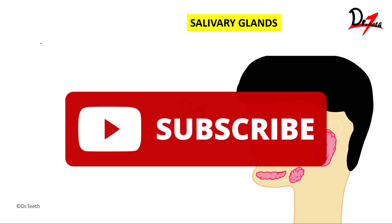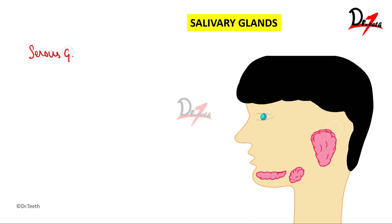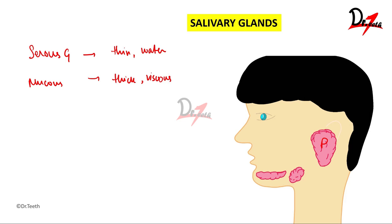According to the nature of the saliva produced, we can classify salivary glands as serous glands, which contain serous cells and produce thin and watery saliva — the parotid and lingual glands fall here. Mucous glands contain mucous cells and secrete thick and viscous saliva — the buccal and palatal glands fall under this. Mixed salivary glands contain both serous and mucous cells; the submandibular and sublingual glands are in this category.